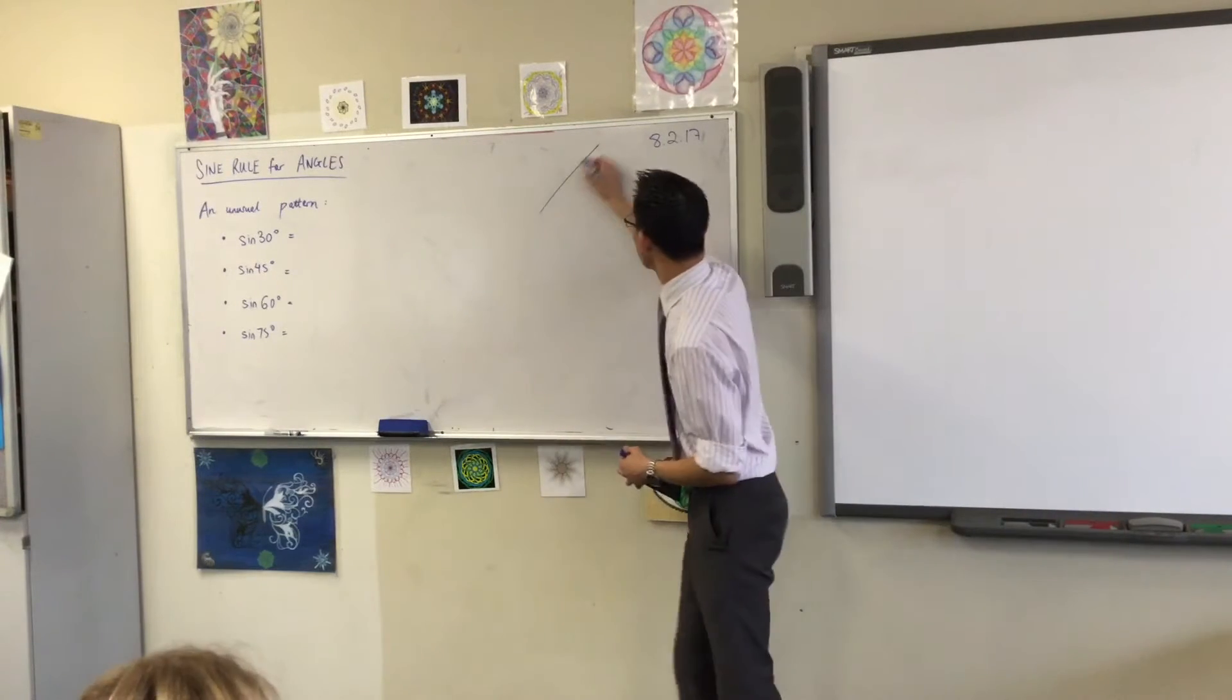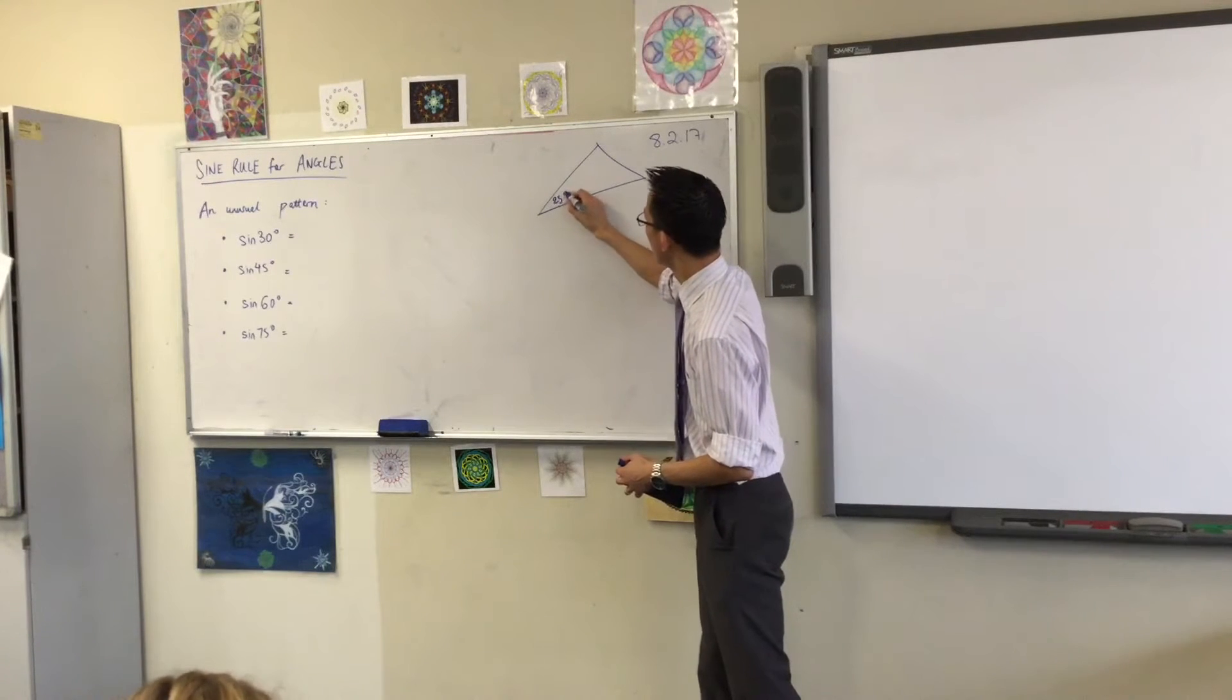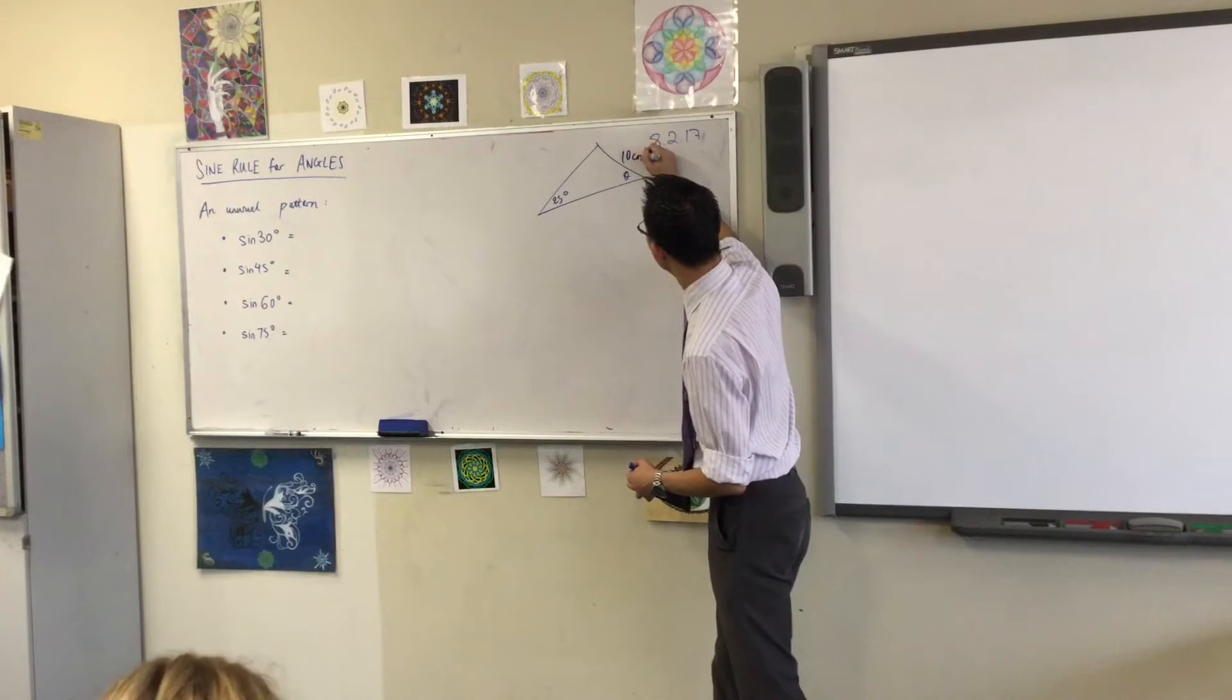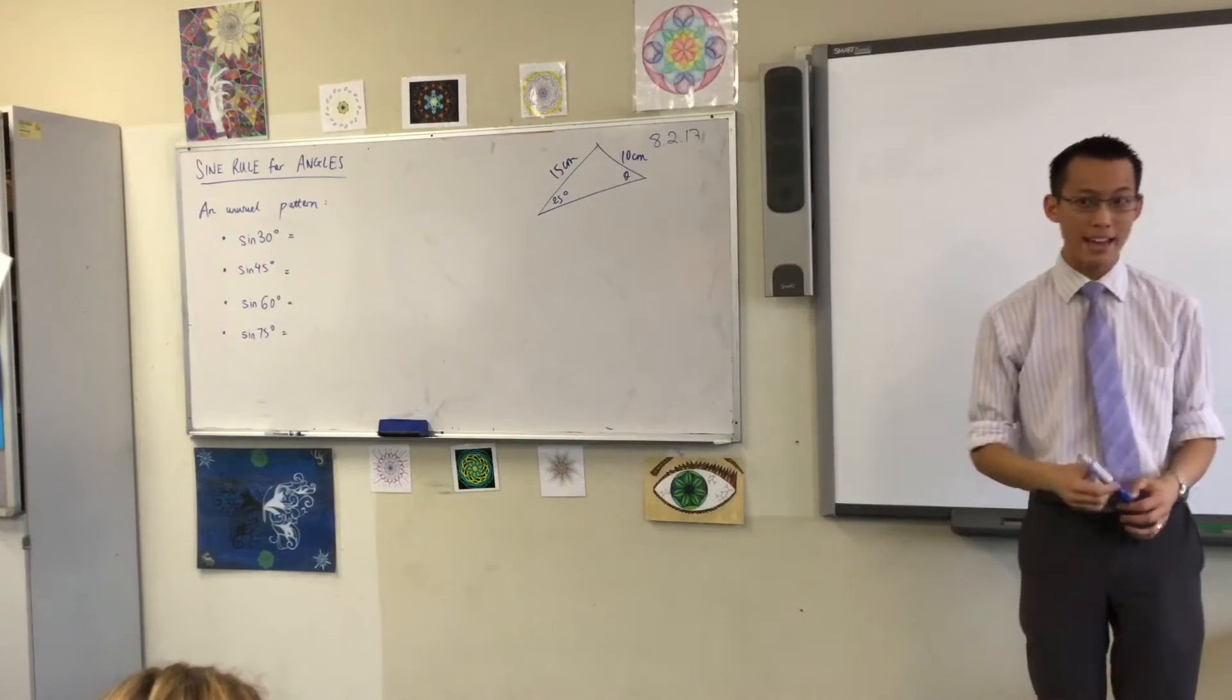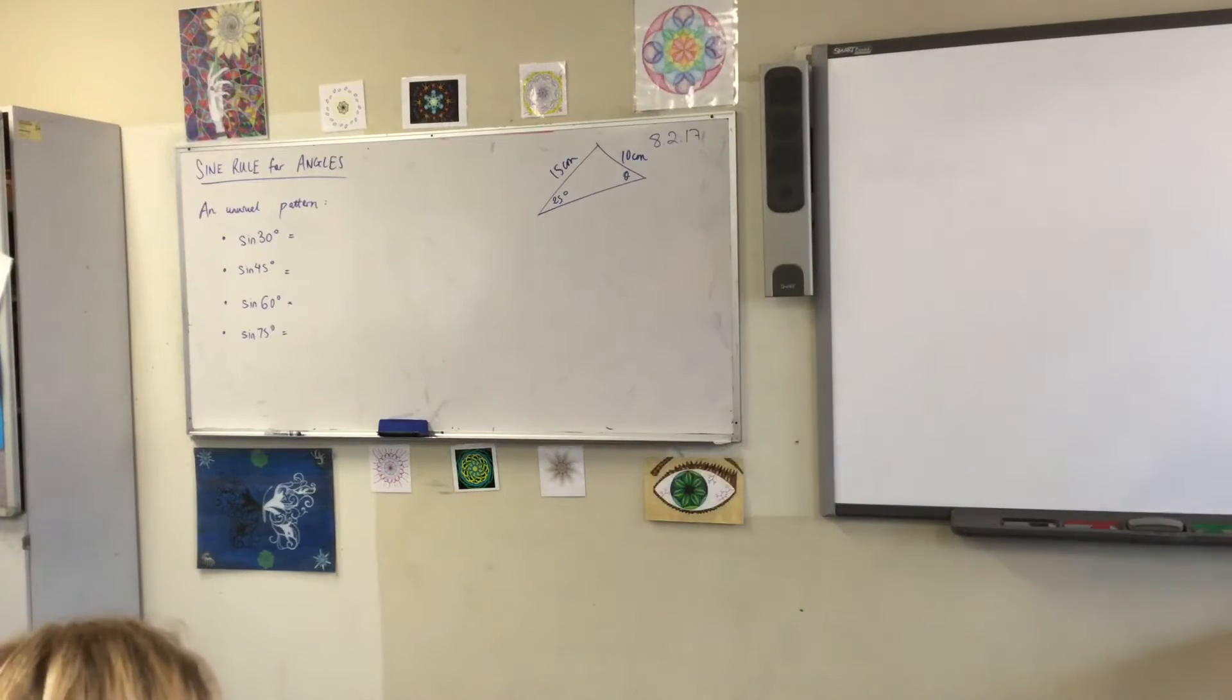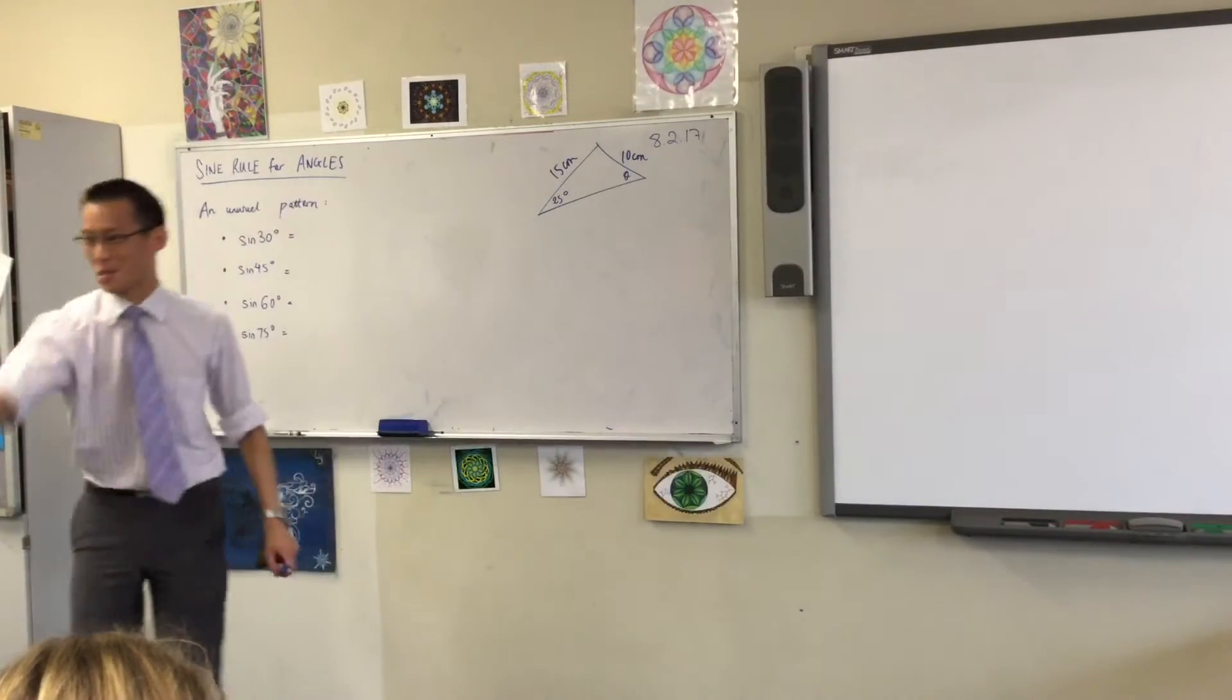If I gave you something like this triangle with no right angles in sight, we can use the—I need another color—what's it called again? It's got sine in it. We can use the sine rule.